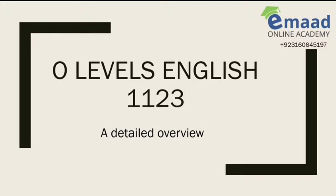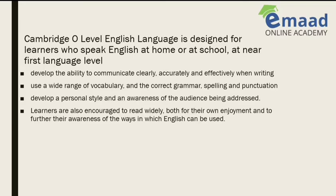Let's have a detailed overview of what O Levels English is all about. Its official code issued by Cambridge is 1123. Keep in mind that this code is for English — basically for those people who have English as their first language at home or at school, or who are close to someone who speaks English as a first language. If you choose this course, code 1123, you cannot choose any other English language course at O Levels.